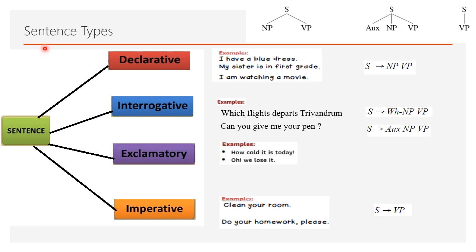Now, let's understand what are the various sentence types. Sentence can be declarative, interrogative, exclamatory and imperative. Declarative means a statement. Interrogative means a question. Either a yes or no question or a WH question. Exclamatory. Some exclamation. Imperative means some order or request. Here, sentence can be: My sister is in first grade. I am watching a movie. I have a blue dress. I am listening to this class. These are some declarative sentences. So the common format is some noun phrase followed by some verb phrase. This I is a noun phrase. I am watching a movie. It is a verb phrase. So sentence can be NP VP.